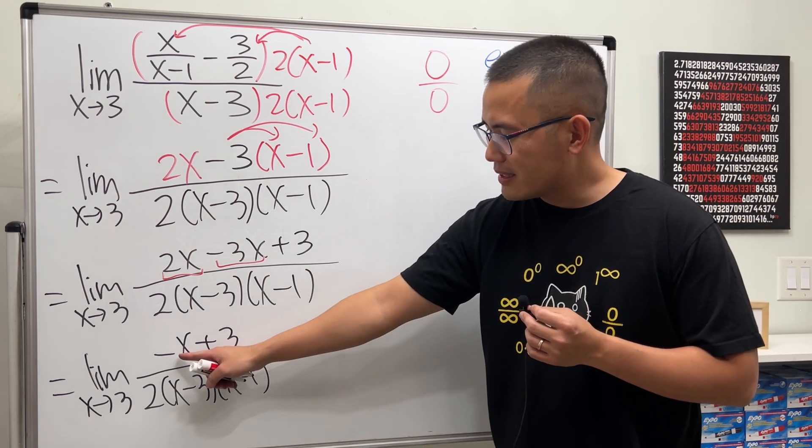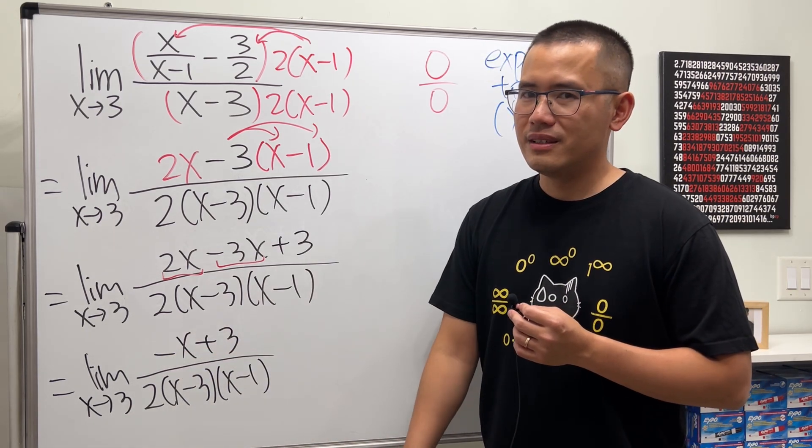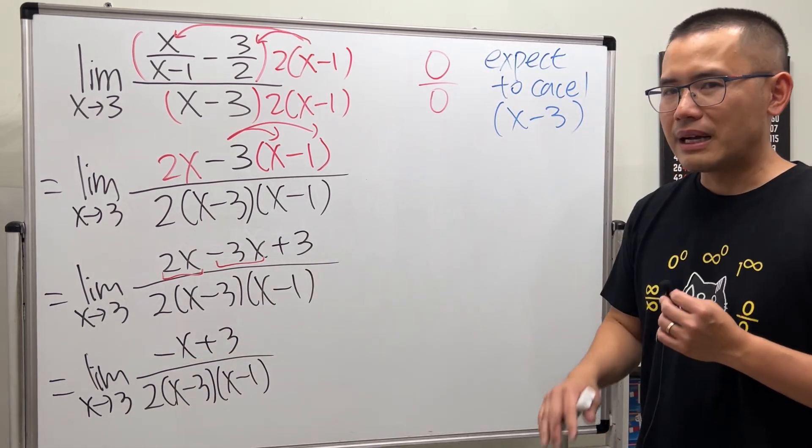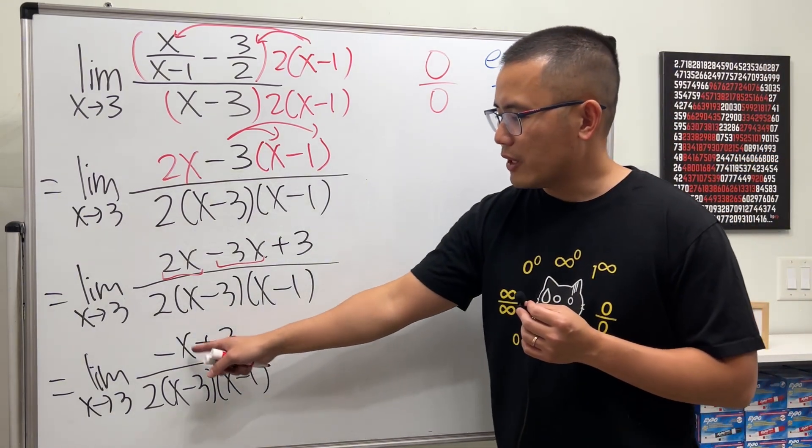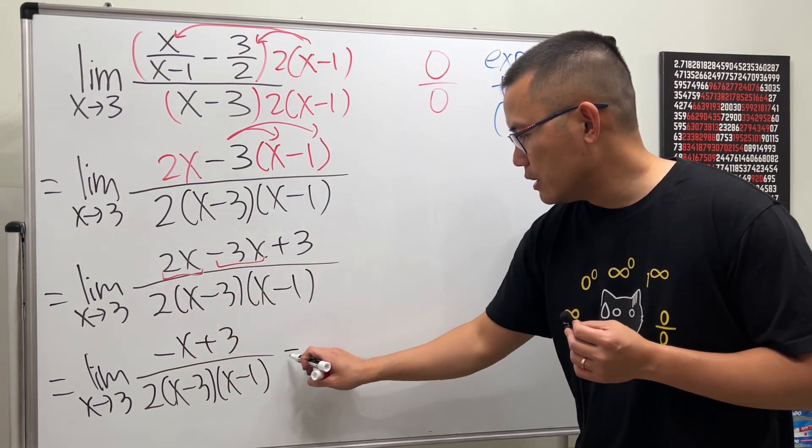Notice the top is negative x plus 3, almost right, but don't worry because we can factor out a negative. Let me show you.